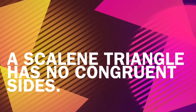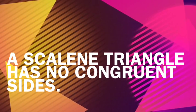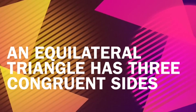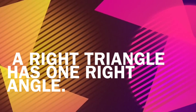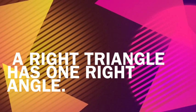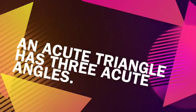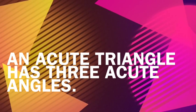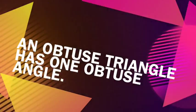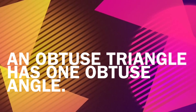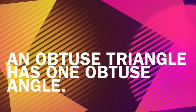A scalene triangle has no congruent sides. An equilateral triangle has three congruent sides. A right triangle has one right angle. An acute triangle has three acute angles. An obtuse triangle has one obtuse angle.